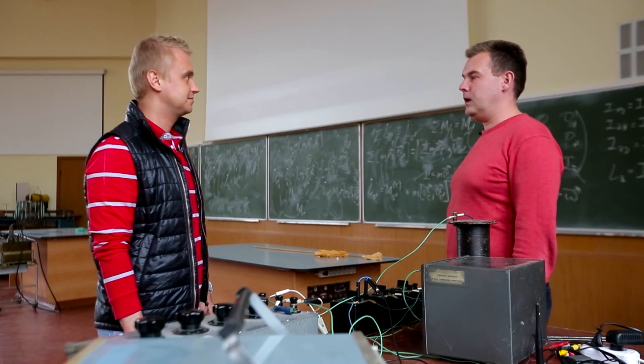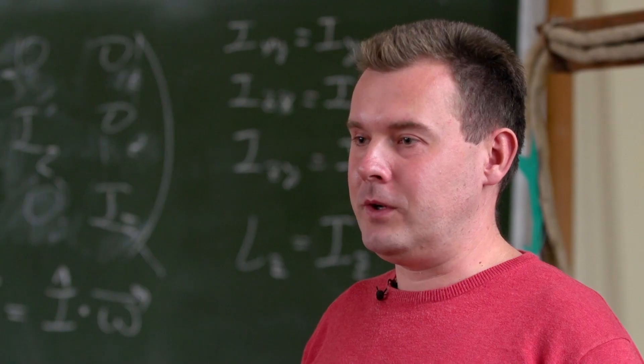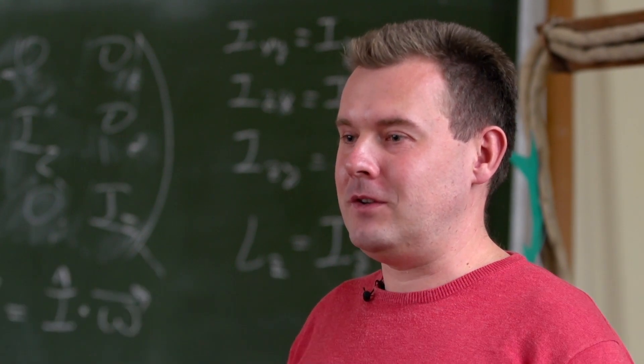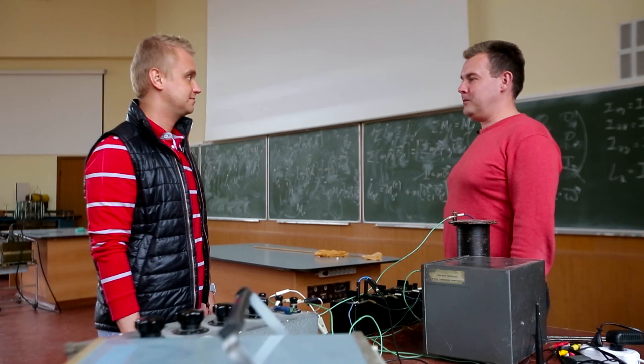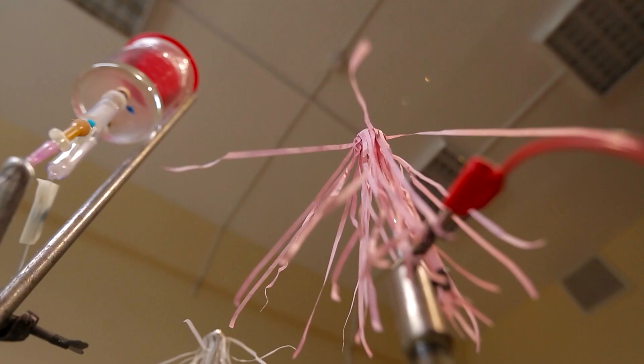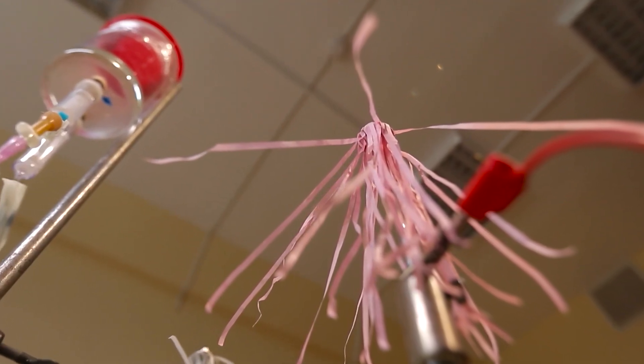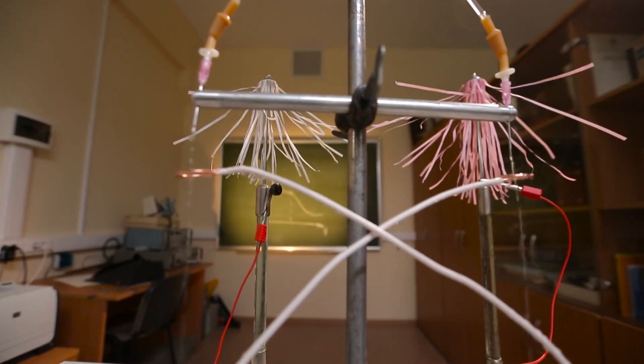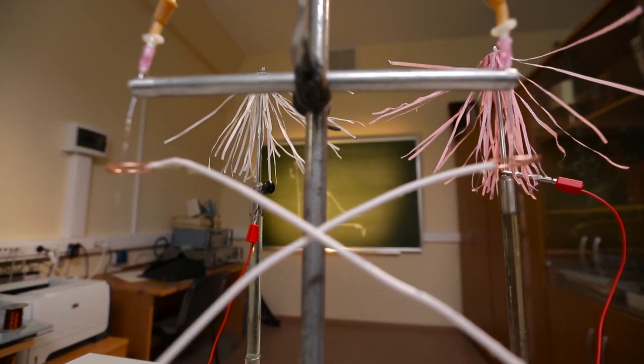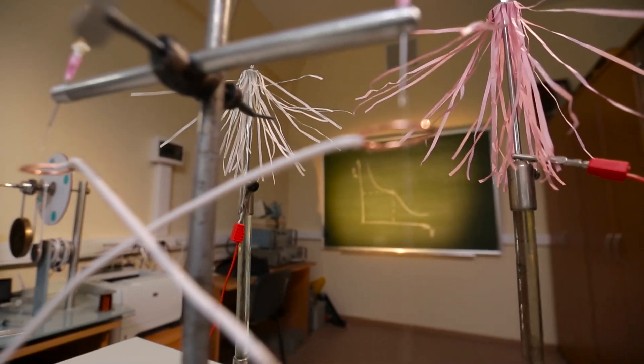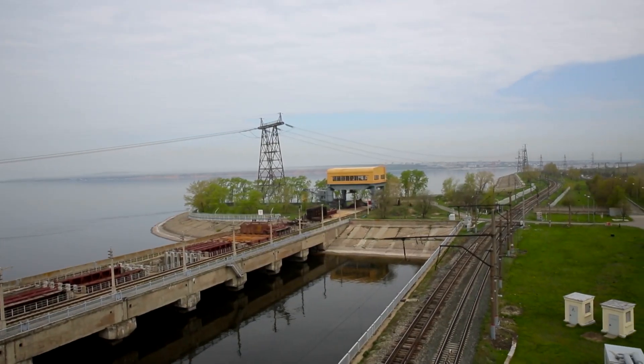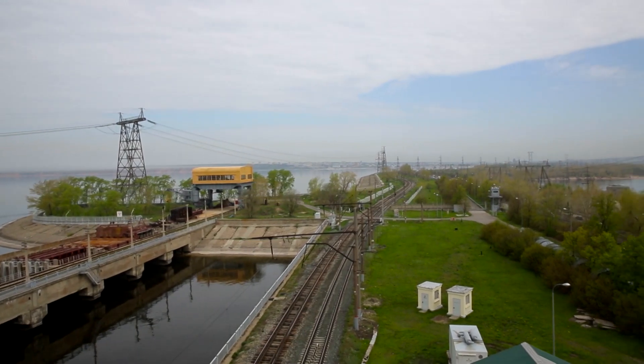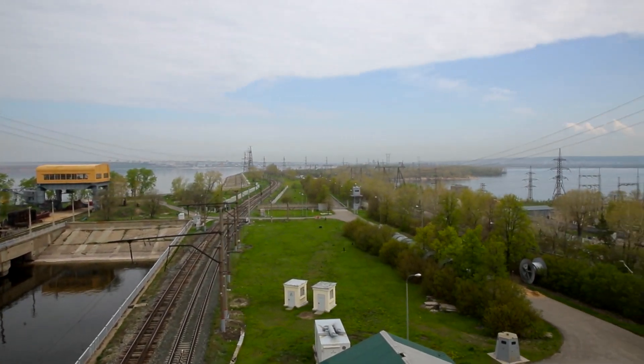It means that if you pour through a Kelvin water dropper as much water as is poured through a power plant, you will get the result a million times lesser than what you would get at the power plant. A Kelvin water dropper is an interesting experiment, a smart structure, lab work, but nothing more. Pouring water on turbine blades, which happens at all hydroelectric power plants, is much more efficient.